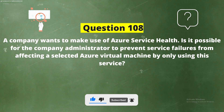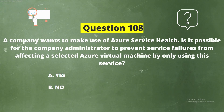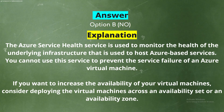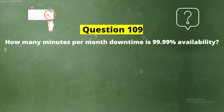Question 108: A company wants to make use of Azure Service Health. Is it possible for the company administrator to prevent service failures from affecting a selected Azure virtual machine by only using this service? The correct answer is Option B: No. Azure Service Health monitors the health of the underlying infrastructure hosting Azure services; you cannot use it to prevent service failure of a virtual machine. To increase availability, consider deploying virtual machines across an availability set or availability zone.